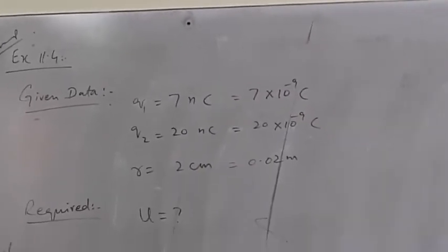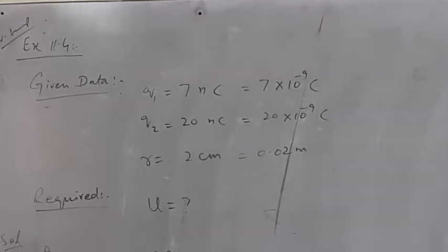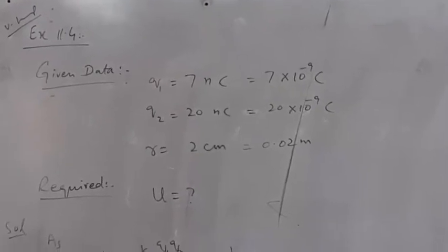What is the electric potential energy of a 7 nano coulomb charge that is 2 cm from a 14 nano coulomb charge?